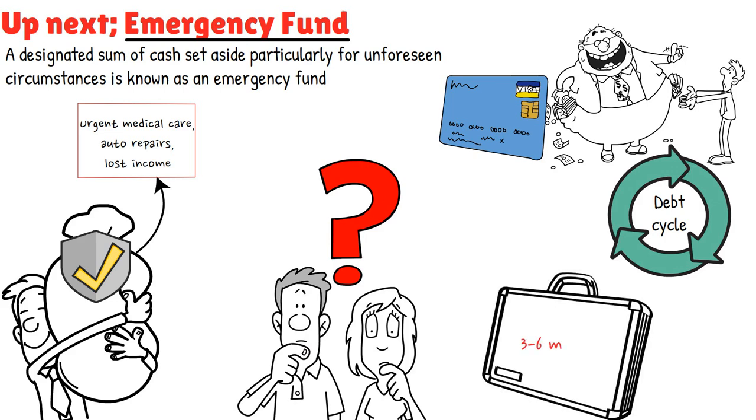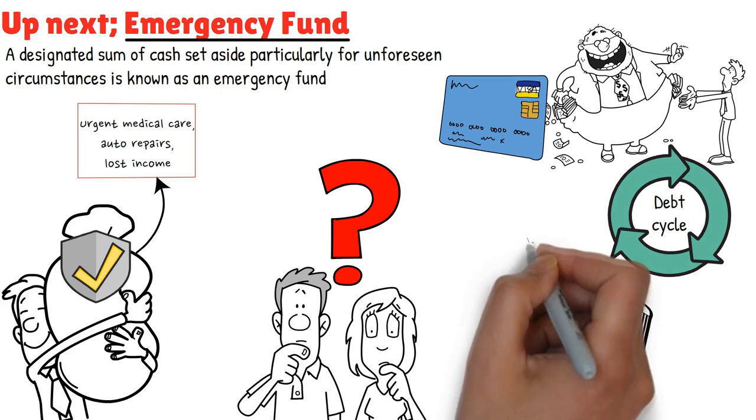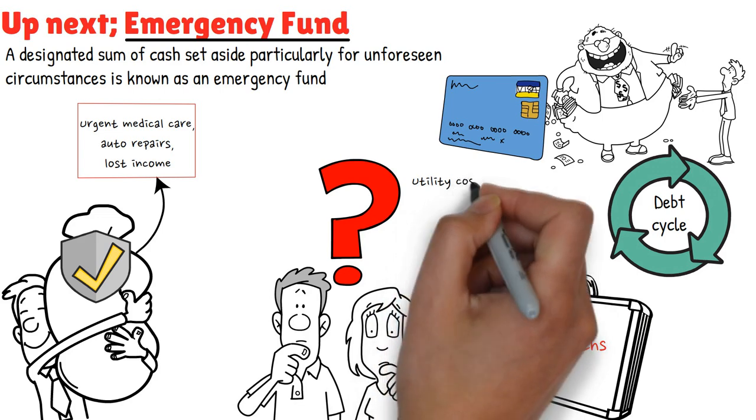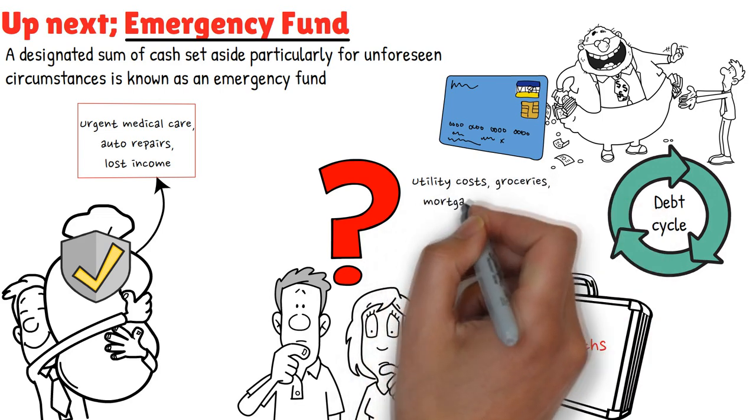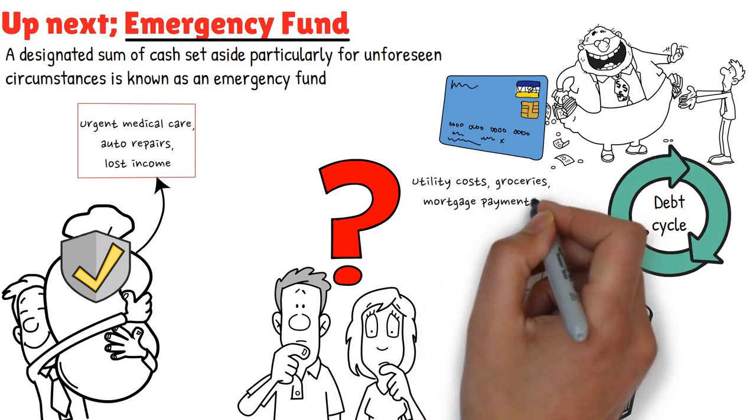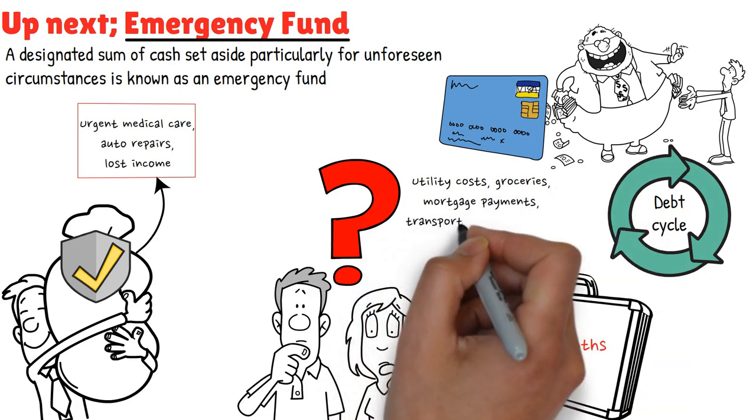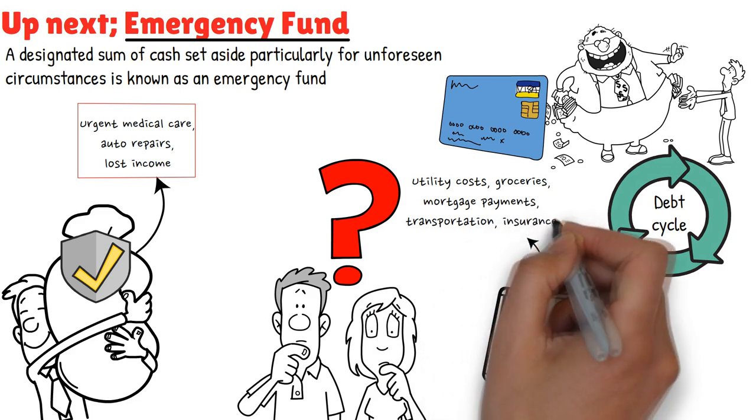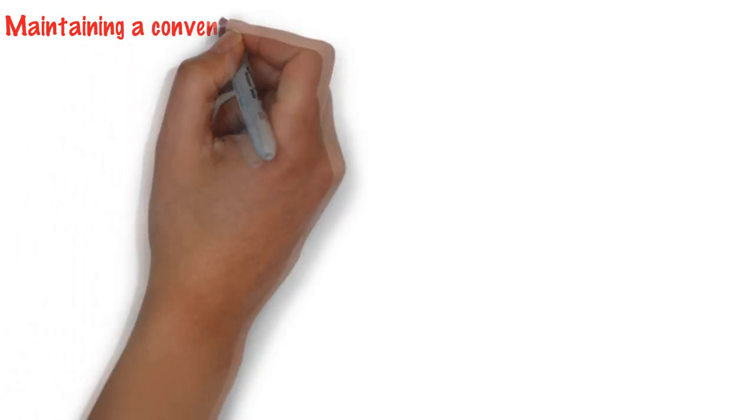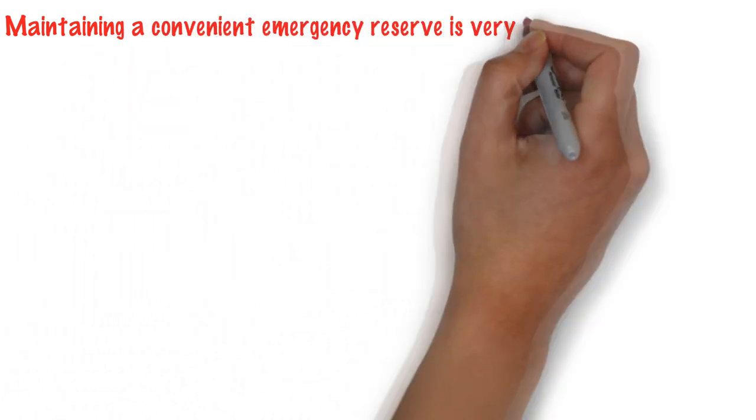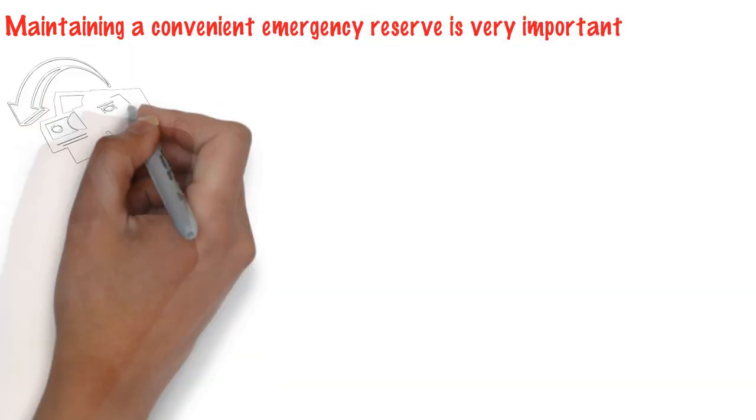Here's an idea of it: keeping three to six months worth of living expenses in savings is a reasonable rule of thumb, though the appropriate amount will depend on your particular circumstances. This includes necessities like utility costs, groceries, mortgage payments, transportation, and insurance.